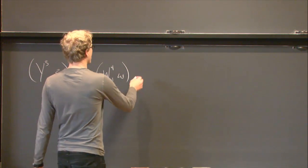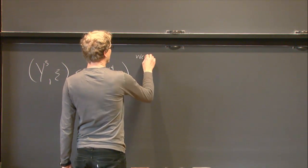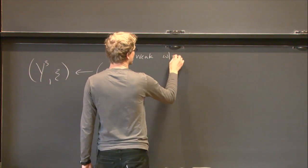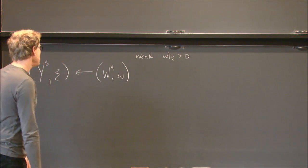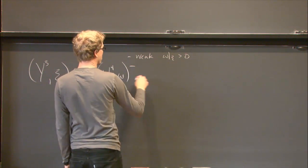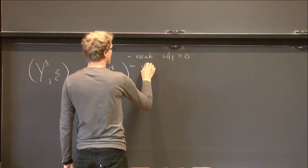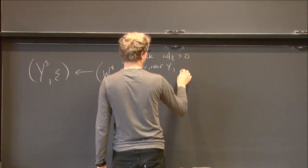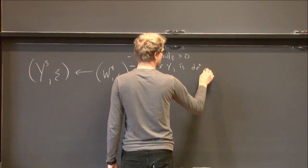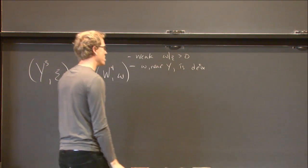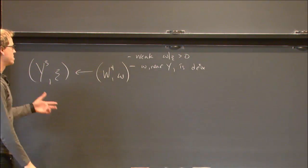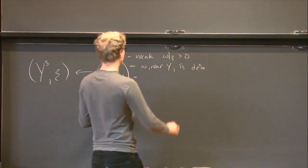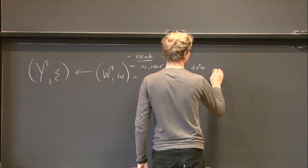Usually the constraints we put on are weak boundary compatibility, which says that the symplectic form restricted to the contact planes is positive. We can ask for strong compatibility, which says that near Y, omega looks like d(e^t α)—some locally exact form where e^t is somehow expanding. That's weak; the other is strong.